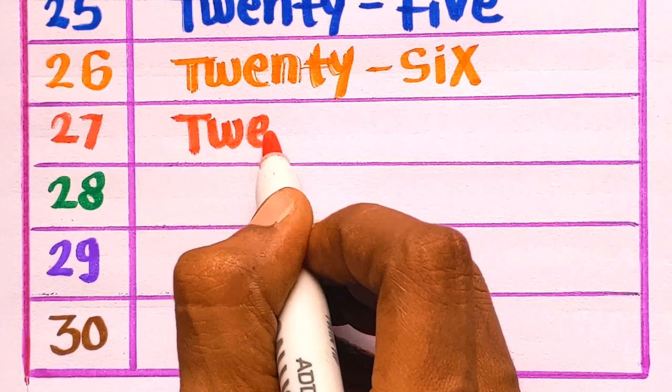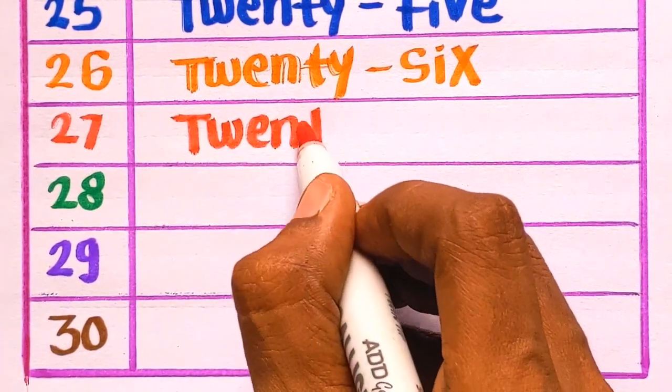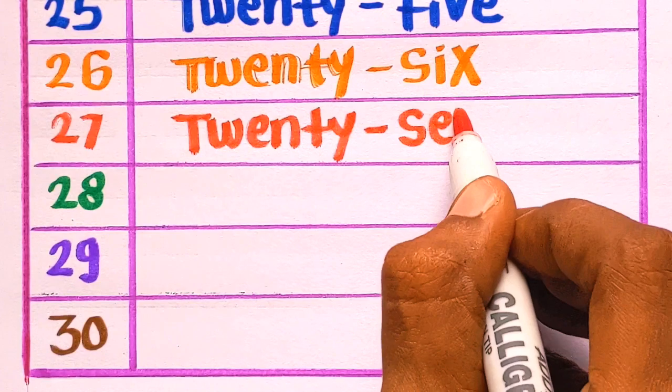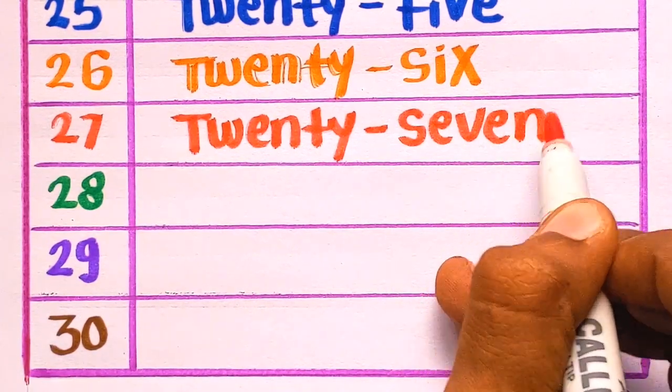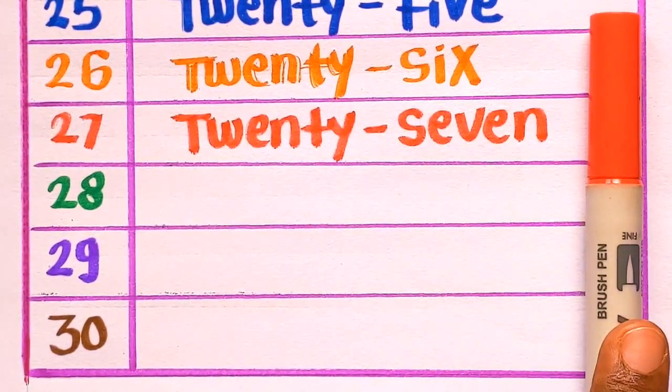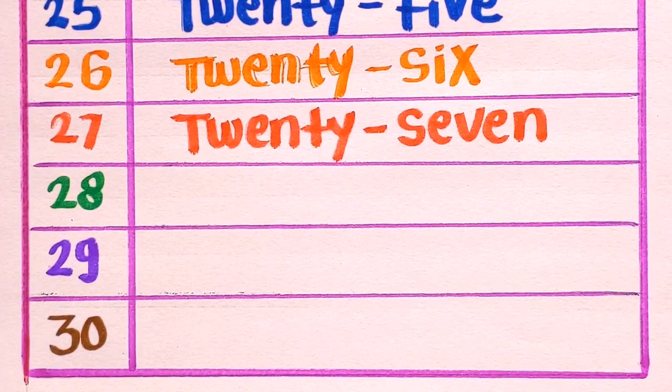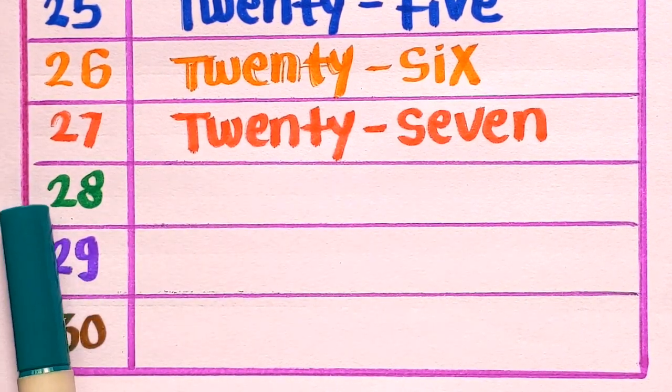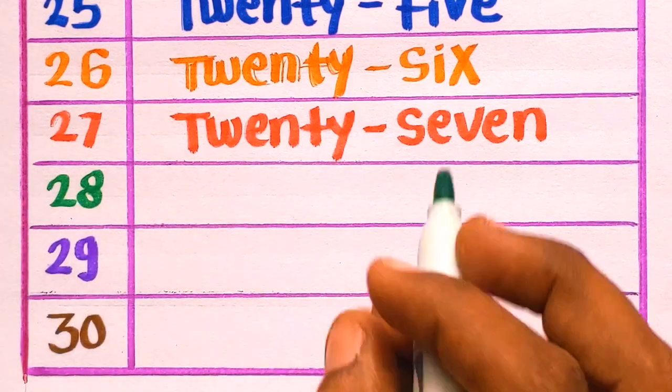T-W-E-N-T-Y-27. S-E-V-E-N-27, with the red color. After number 27, next is number 28. 2-8-28.